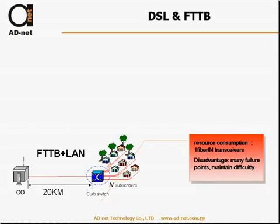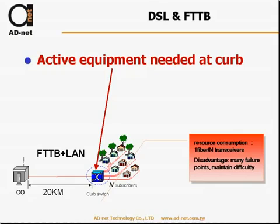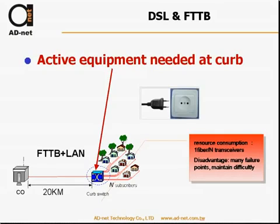You might ask: why not use fiber to the building, or fiber to the curb technology? You install fiber equipment at the curb and then run UTP LAN cables to each of the buildings. The problem is that you need active equipment at the curb, and each group of houses requires its own curb switch — creating a two-layer network. Each of those switches requires a power supply, installed in locations that are difficult to control.